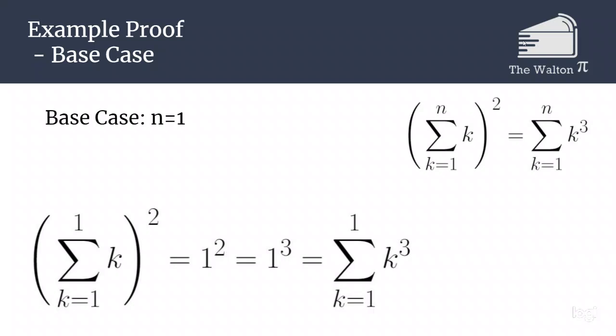So that squared is just going to be 1 squared which is equal to 1 cubed, which is what we would get if we looked at the sum from k equals 1 to 1 of k cubed. So our base case has been shown to be true.